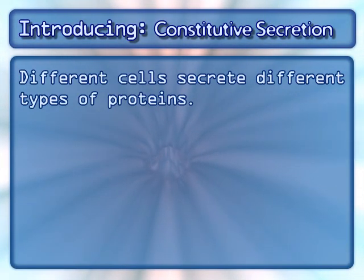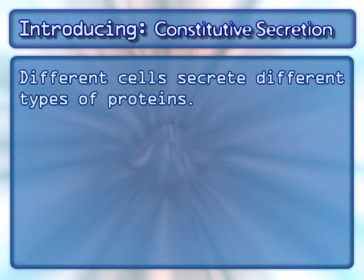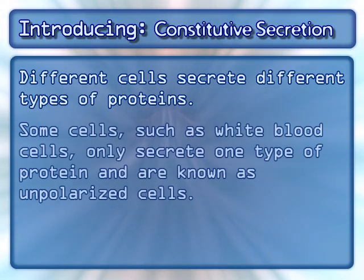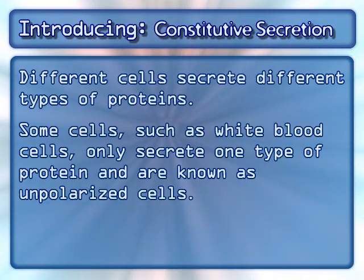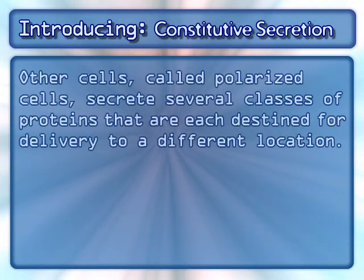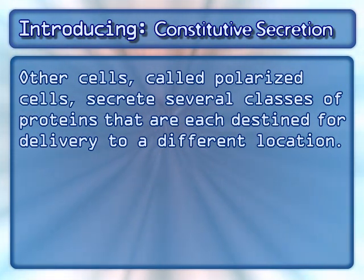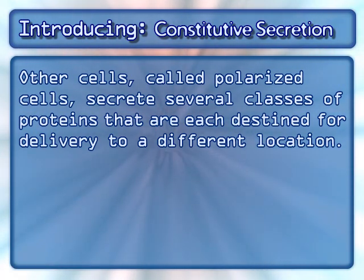Different cells secrete different types of proteins. Some cells, such as white blood cells, only secrete one type of protein and are known as unpolarized cells. Other cells, called polarized cells, secrete several classes of proteins that are each destined for delivery to a different location.